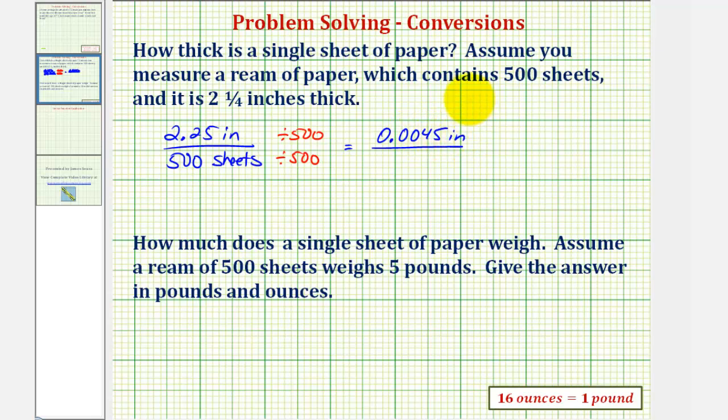This would be inches. Of course five hundred divided by five hundred is one. So this is the thickness per one sheet. So we can say the thickness of one sheet of paper is zero point zero zero four five inches.